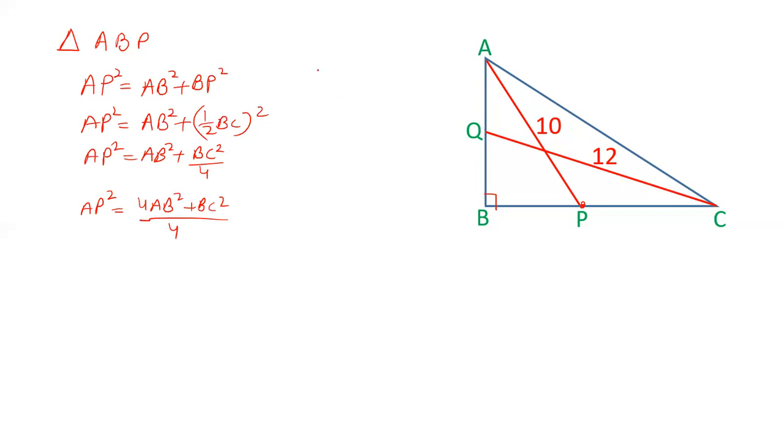Now similarly, we will take triangle BQC. B is 90 degrees, QC is hypotenuse. Square of hypotenuse is BQ square plus BC square. Q is the midpoint of AB, so BQ is half of AB. BQ can be written as half of AB squared plus BC square. AB square upon 4 plus BC square. Taking it the same, AB square plus 4BC square equals QC square.